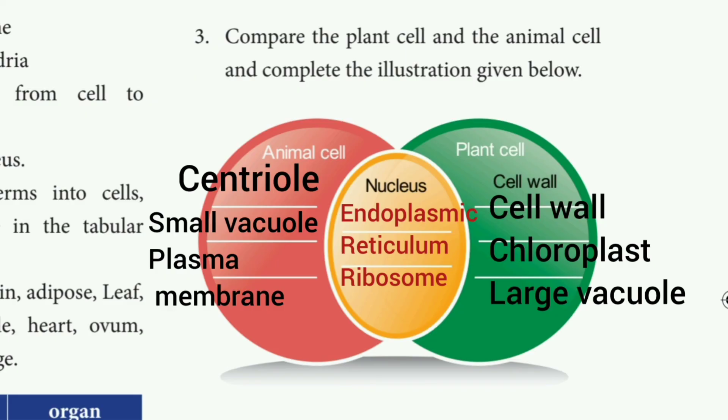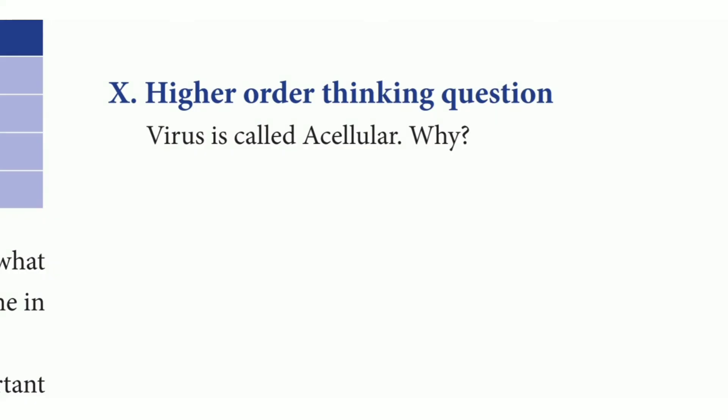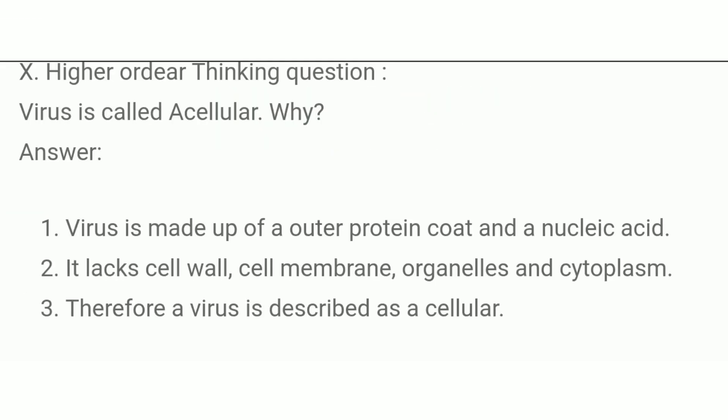And third question: Compare the plant cell and animal cell and complete. Animal cell: centrosome, smaller vacuole, plasma membrane. Then nucleus, endoplasmic reticulum, ribosomes. Then cell wall, chloroplast, large vacuole. Higher order thinking question: Virus is called acellular, why? The answer is virus is made up of an outer protein coat and nucleic acid. It lacks cell wall, cell membrane, organelles and cytoplasm. Therefore a virus is described as acellular.